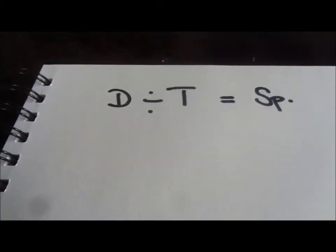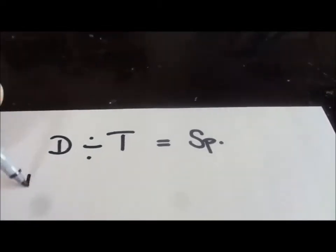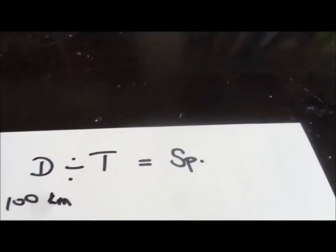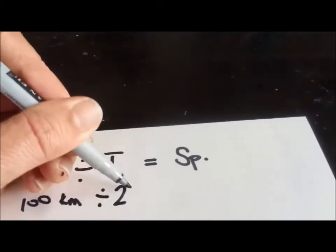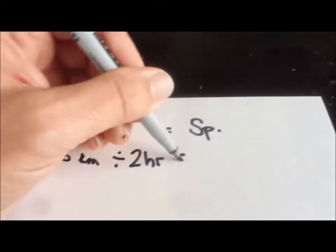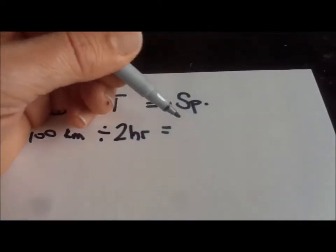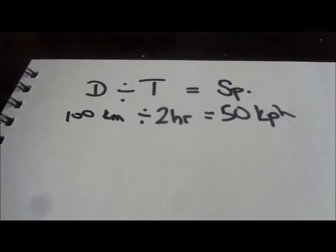Now then, as a simple example, if we had a hundred kilometres as our distance, and a vehicle did it in two hours, we just divide a hundred by two. And what do we come up with? Fifty kilometres per hour. Absolutely, that would be fifty kilometres per hour. But that's a very simple sum. We're not going to do that sum. That's way too simple.